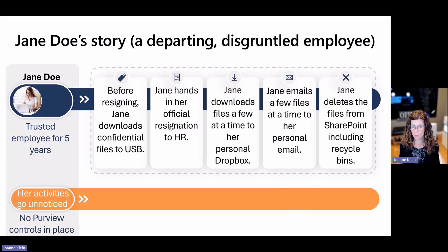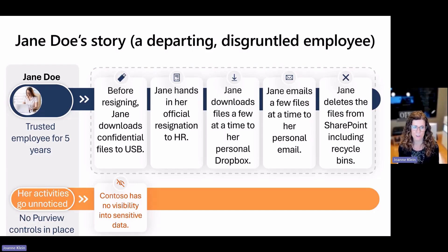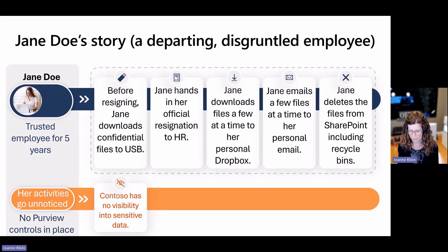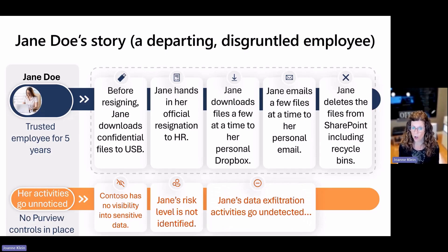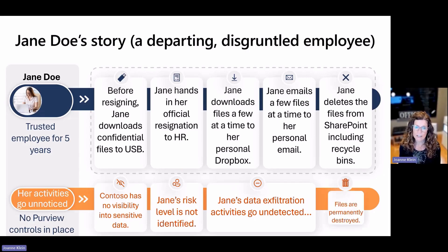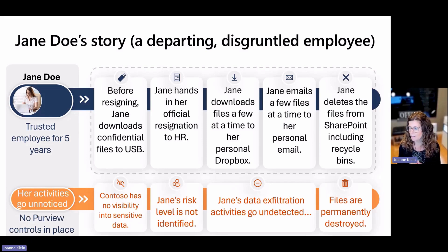So what does this look like in an organization if they have no Purview controls in place? This would be worst case scenario. First of all, the organization would have no visibility into the sensitive data that was being downloaded. They couldn't differentiate what was confidential versus what wasn't. The official resignation being handed into HR doesn't change any kind of perceived risk level for Jane at all. Those exfiltration events, although certainly audited, would likely go unnoticed — lost in a sea of other activity being logged across the tenant. And when files are deleted out of both the live library location and the first and second stage recycle bins, they are in fact permanently destroyed.